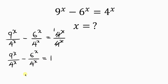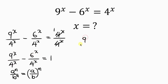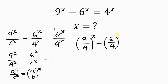Our next step is to apply the law of indices, which says when I have a over b carrying a power of m, this is equal to a over b all raised to the common power m. Applying this, we get 9 over 4 all raised to the power x minus 6 over 4 all raised to the power x equals 1.